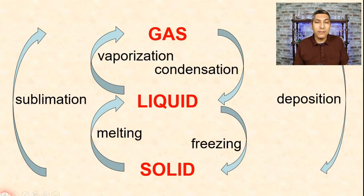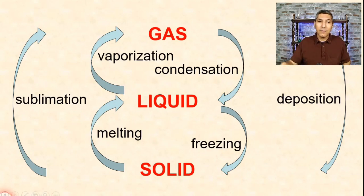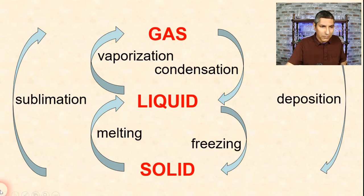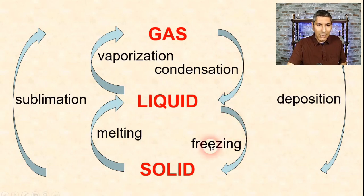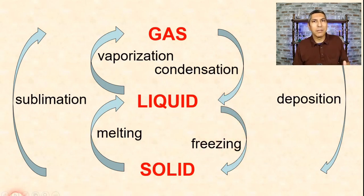So there are six phase changes you need to know about: melting, vaporization (with its two types — evaporation and boiling), sublimation, condensation, freezing, and deposition. There's a lot of vocabulary here as we talk about these phase changes.